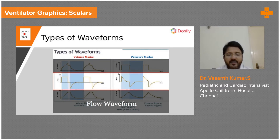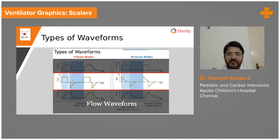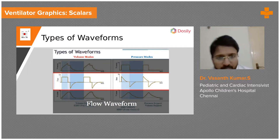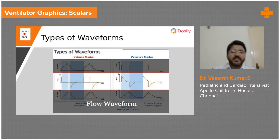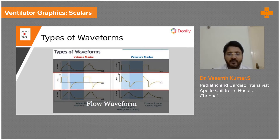The next is: whichever looks like a mountain is called the volume-time scalar. You can see this one is looking like a mountain — so this becomes the volume-time scalar. So to summarize: mountain shape is volume-time, and negative deflection is flow-time.